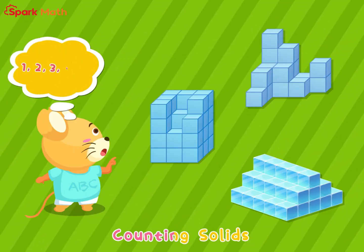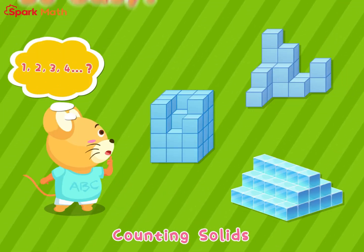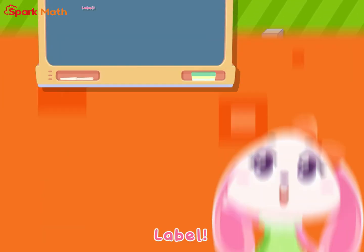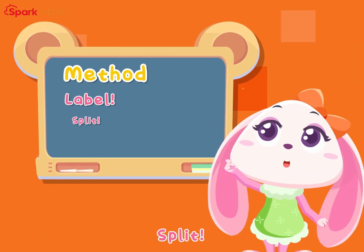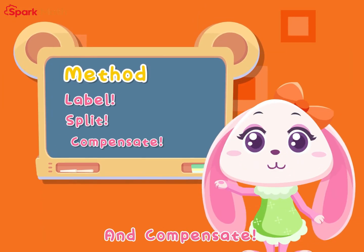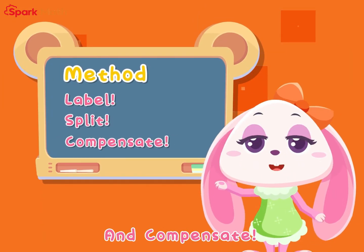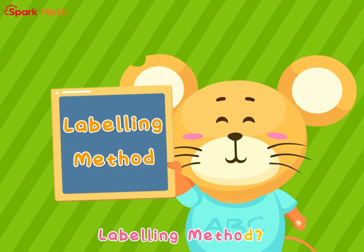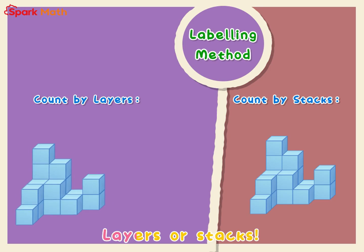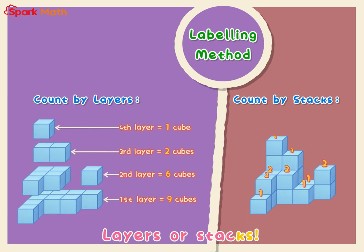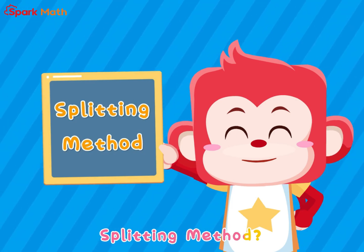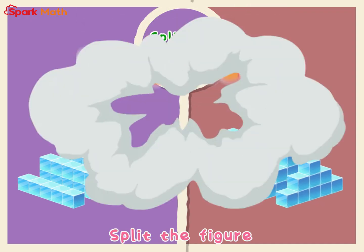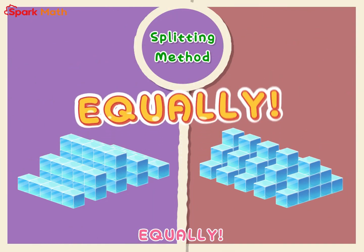Counting solids — so easy. Label, split, and compensate. Labeling method: layers or stacks. Splitting method: split the feeder equally.